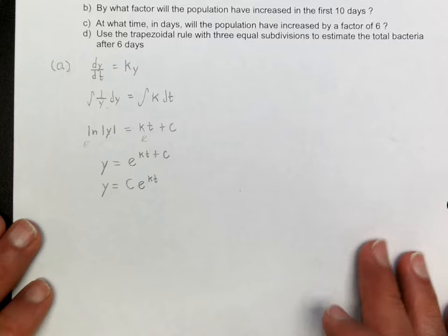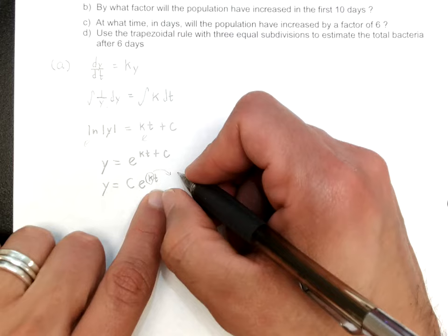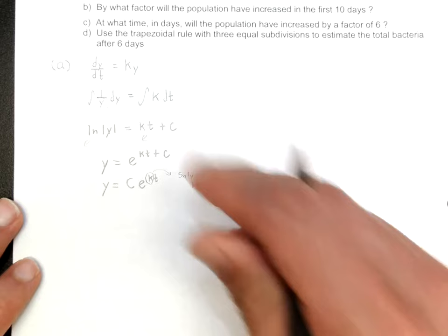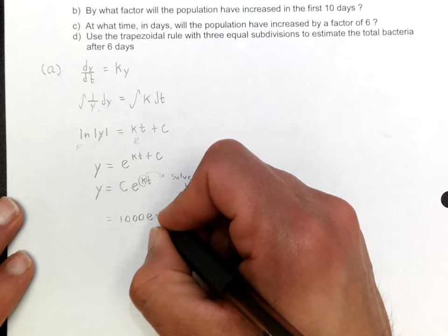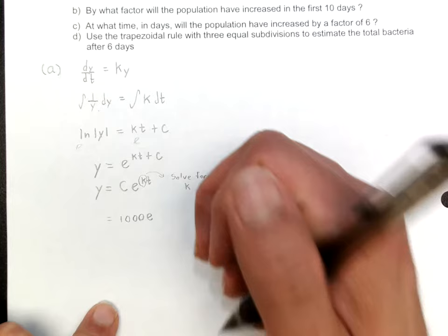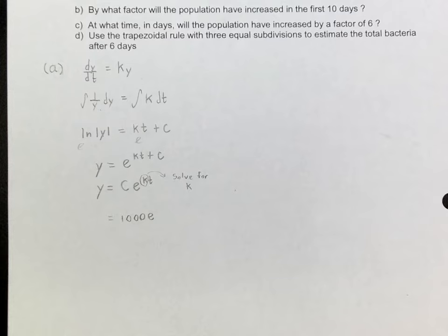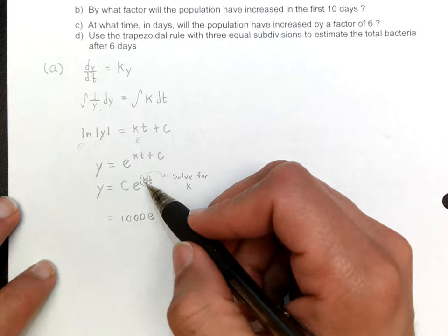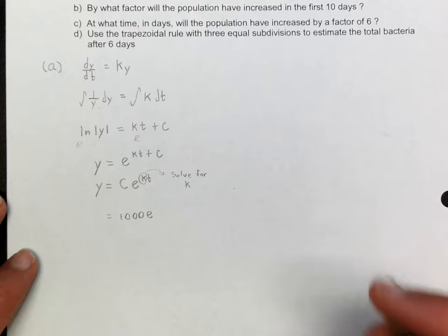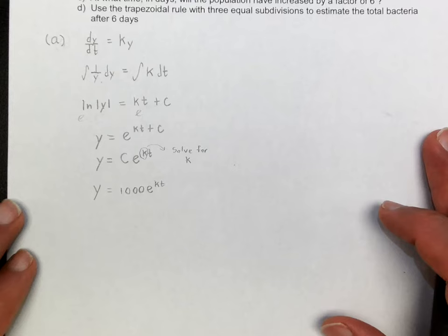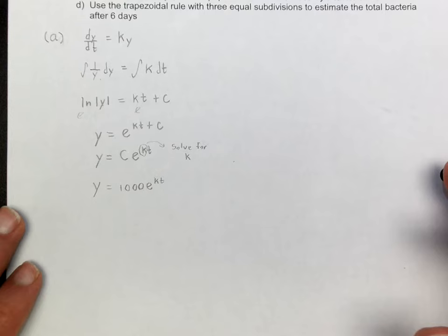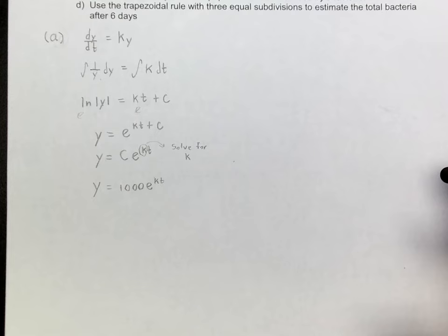Now we solve for K. First, plug in the initial condition: at t = 0, Y = 1,000. That gives 1,000 = C · e^0 = C, so C = 1,000. Our equation so far is Y = 1,000e^(Kt). We still need to find K using the fact that the population triples in five days.